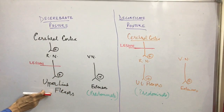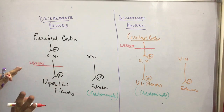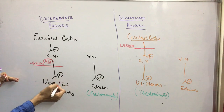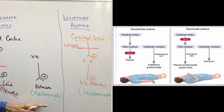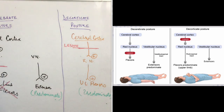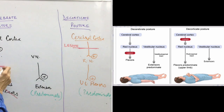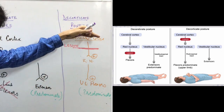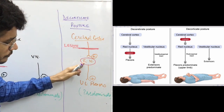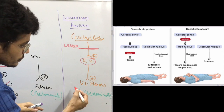So the vestibular nucleus is stimulatory for the extensor muscles, and the red nucleus is stimulatory for the flexor of the upper limb. If there is a lesion below the level of the red nucleus, then the rubrospinal tract will be cut — there won't be any stimulation of the upper limb flexor. Only extensor muscles will get stimulation, so there will be decerebrate posture — in decerebrate posture, there is entire extension. If instead the lesion removes the cortical control of the cerebral cortex from the red nucleus, then the red nucleus won't be directly stimulated by the cortex.